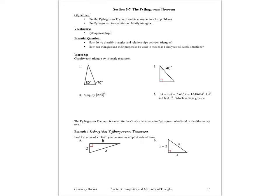Hello, ladies and gentlemen, this is Ms. Skokin. Back in Chapter 5, this time we're going to be looking at Section 5-7, the Pythagorean Theorem. Our objectives are to use the Pythagorean Theorem and its converse to solve problems, and use Pythagorean inequalities to classify triangles. For vocabulary, we have Pythagorean Triple.